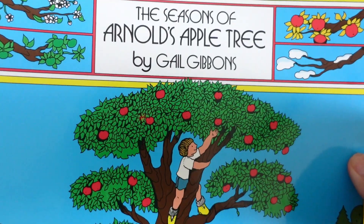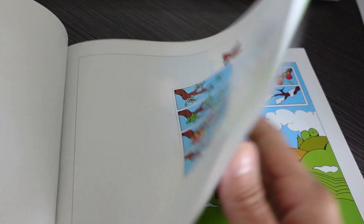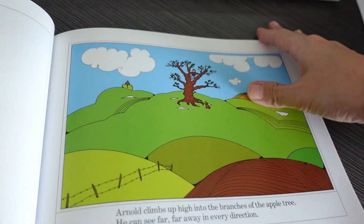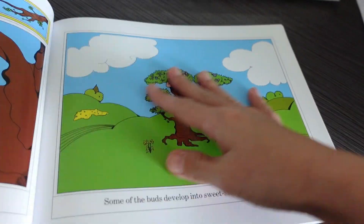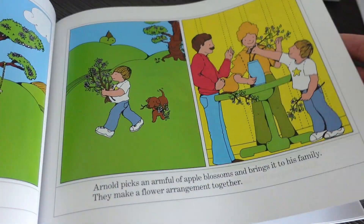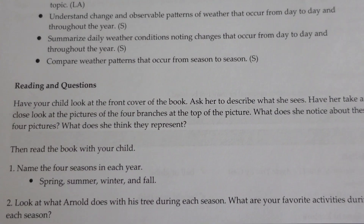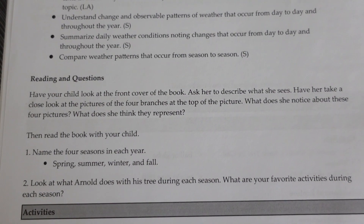Then we get into the reading section. Since this is the first day reading this book, you always want to start by going over the cover. If your child is still learning things like author and illustrator, it's a great time to go over that. Have them guess what the book is going to be about based on the cover, then read through the book with your child. Afterward, there are discussion questions to answer.